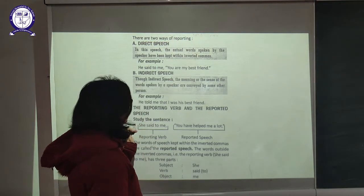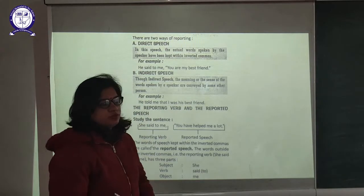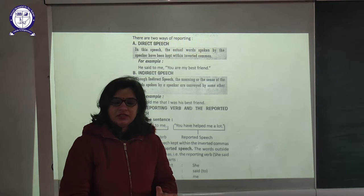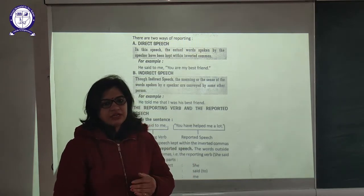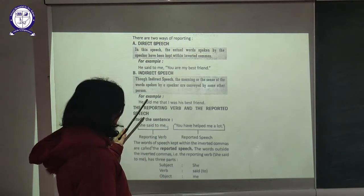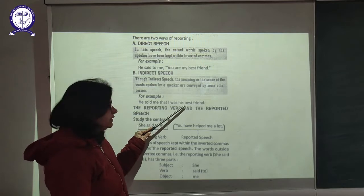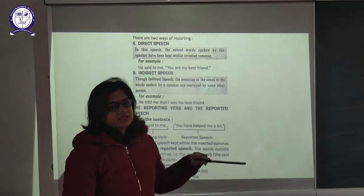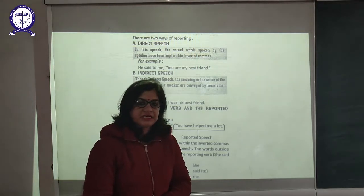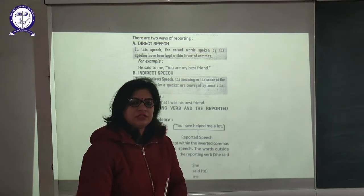Next comes Indirect Speech. In Indirect Speech, the meaning of the words spoken by the speaker are conveyed by some other person. The meaning remains the same but the wording might change — the words are converted into their own words but the meaning remains the same. For example, 'He told me that he was his friend.' You can see in both sentences the meaning is the same but the words are a little bit changed. In Direct Speech we use the exact wordings of the speaker, but in Indirect Speech we use slightly changed words while the meaning and sense of the sentence remain the same.